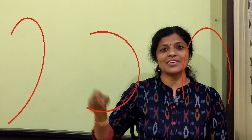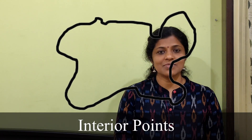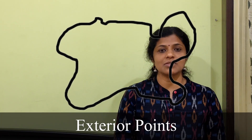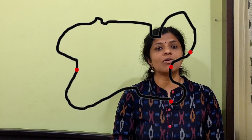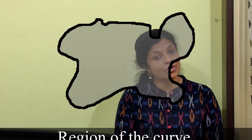Curves come in different types. If a curve does not cut itself at any point, it is called an open curve. This, this, and this are all open curves. If a curve cuts itself, it is called a closed curve. Let us consider this shape. All the points that lie inside the curve are called interior points. The points that lie outside the curve are called exterior points. The points on the boundary are called boundary points. The interior points along with the boundary is called the region of the curve.